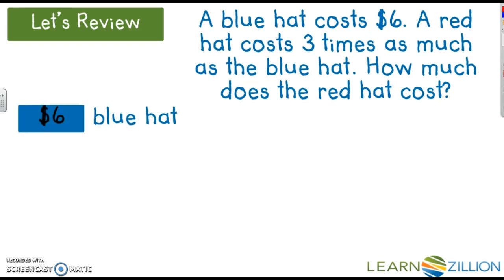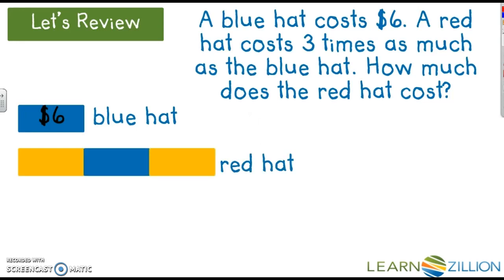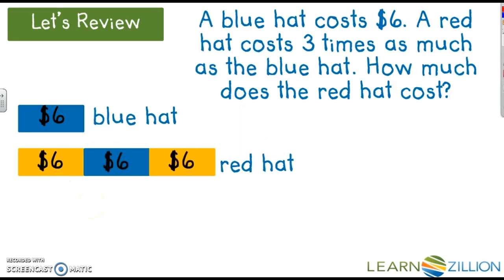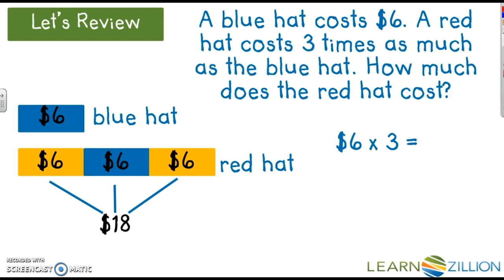The information you know is that the blue hat costs $6, so in a bar model that would be the top block, because 6 is how much one blue hat costs. Then a red hat is 3 times as much, so we do 3 blocks. Since we already know 6 goes in one block, you put a 6 in each of those 3 blocks. Then you can add 6 plus 6 plus 6, or if you know 3 times 6, the answer is $18. So 6 times 3 equals $18.